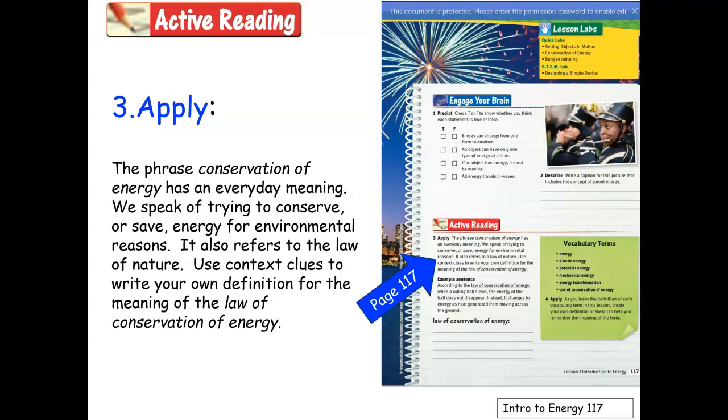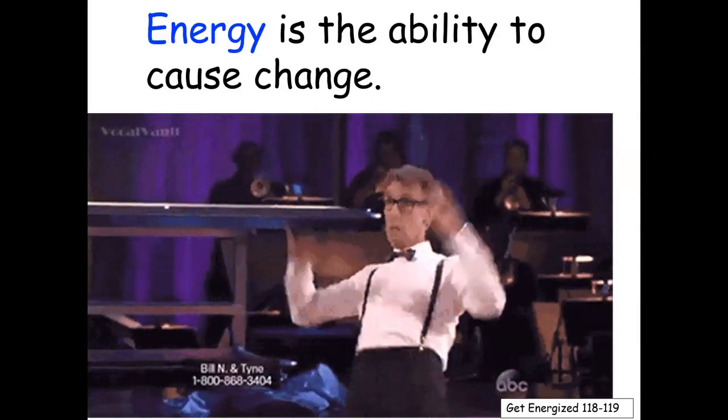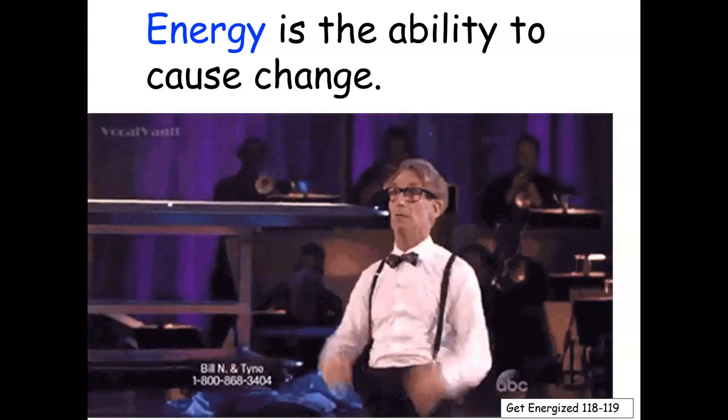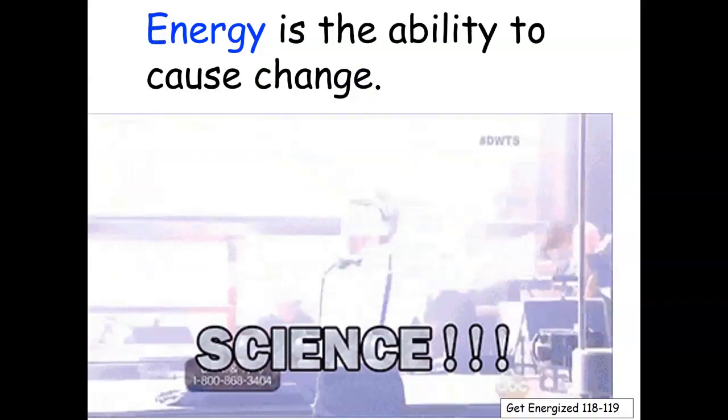The first part of Lesson 1 is called Get Energized, and it's on pages 118 to 119. The essential questions in this section are: What are two types of energy, and can objects have potential and kinetic energy at the same time? Energy is the ability to cause change, and of course everybody describes Bill Nye as having a lot of energy.